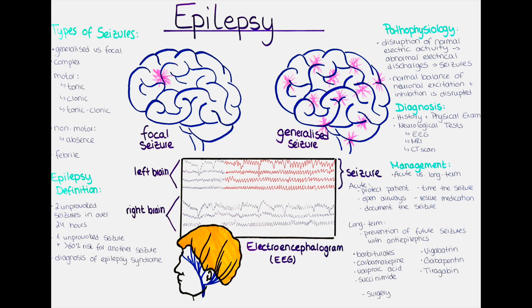Epilepsy can be caused by a variety of factors, including genetics, brain injury, and developmental disorders. Diagnosis typically involves a detailed medical history, physical examination, and neurological tests, and may also require imaging tests like MRI and CT scans.